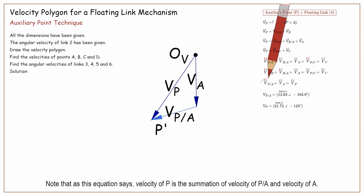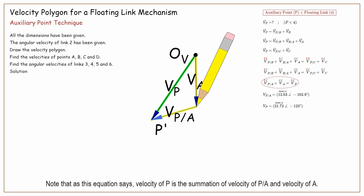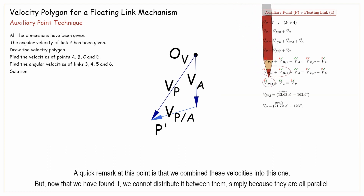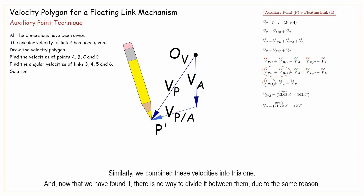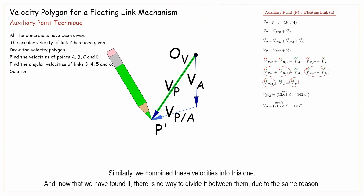Note that, as this equation says, velocity of P is the summation of velocity of P with respect to A, and velocity of A. A quick remark is that we combined these velocities into this one, but now that we have found it, we cannot distribute it between them, simply because they are all parallel. Similarly, we combined these other velocities into one, and now that we have found it, there is no way to divide it between them, due to the same reason.